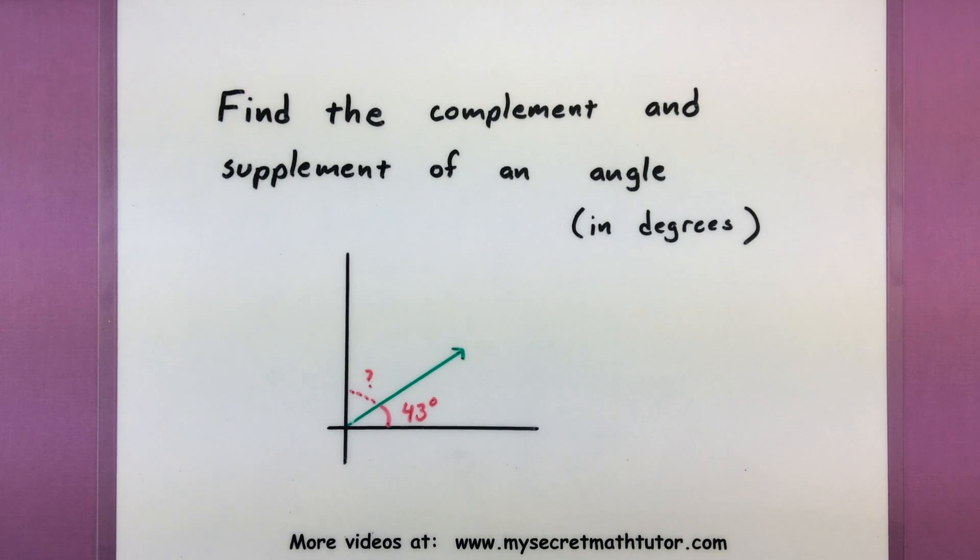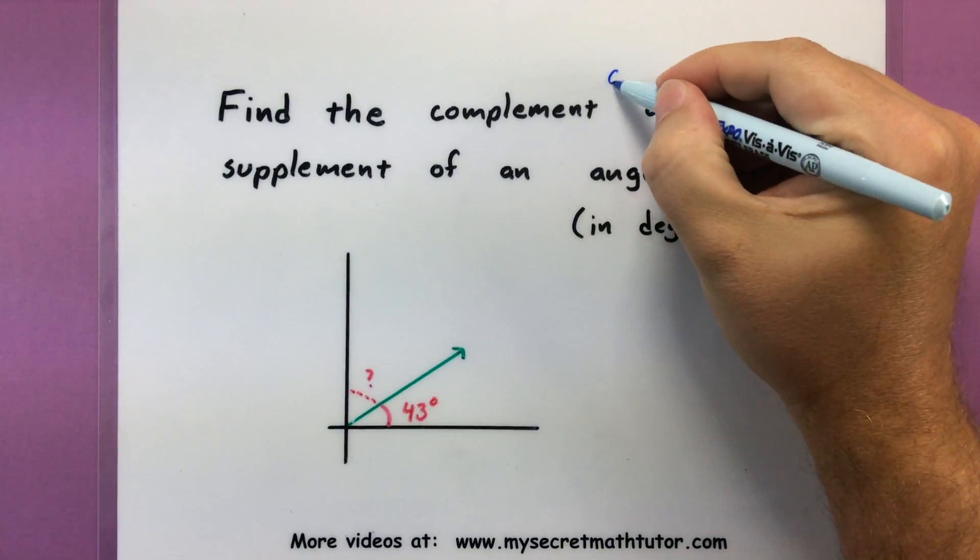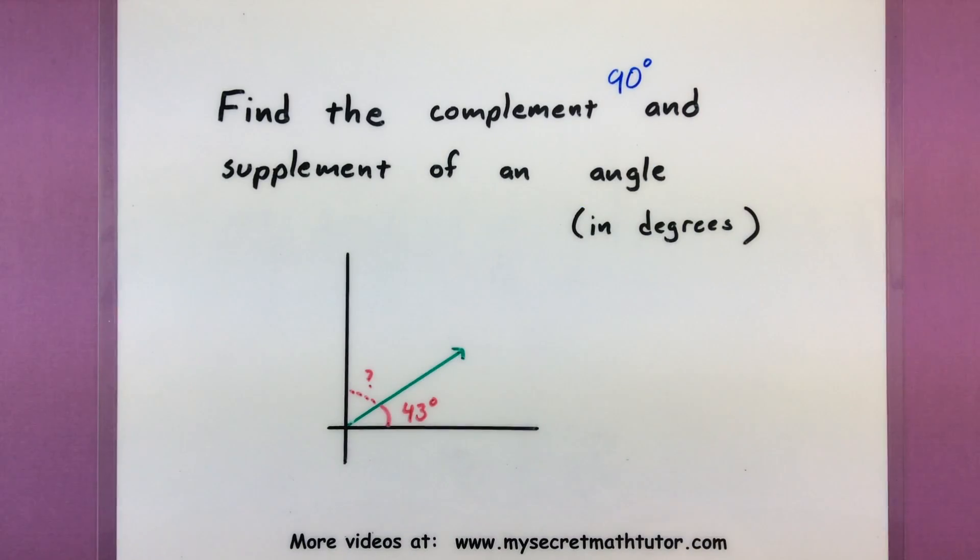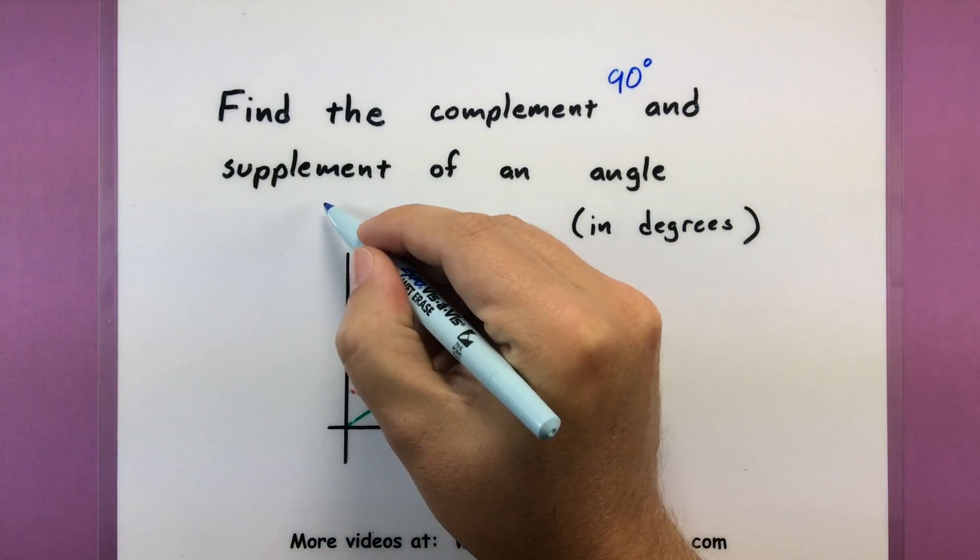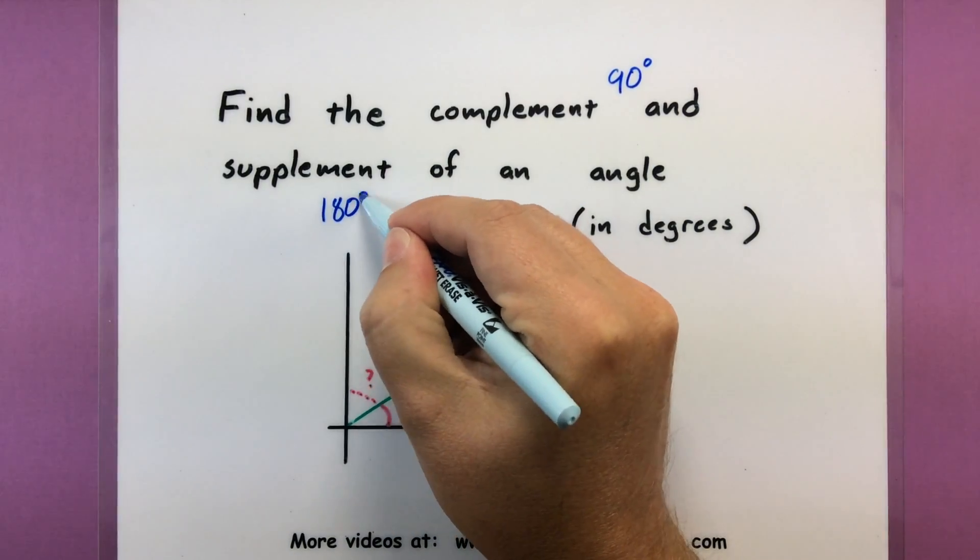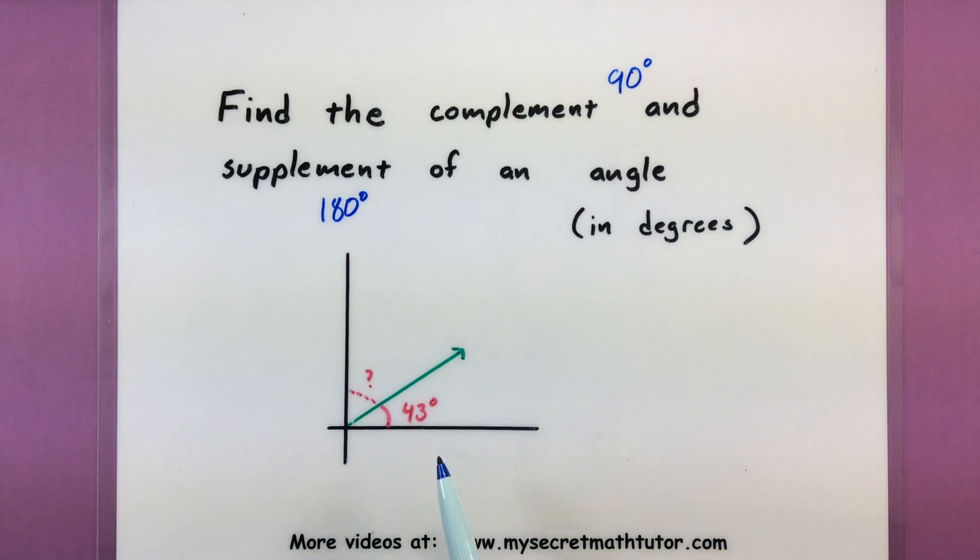So the idea behind this is that complementary angles and supplementary angles are angles that add either 90 degrees, those are our complementary angles, or they add to 180 degrees. Those are our supplementary angles. And so visually it's like we have an angle already and we're looking for that other angle that needs to be added onto it to either make 90 or 180.